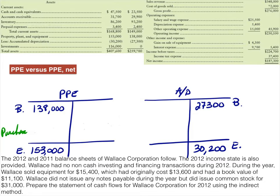Property, plant, and equipment is an asset so it carries a normal debit balance. Accumulated depreciation is a contra asset, so it does appear in the assets section of the balance sheet but it carries a credit balance. In the story it tells us that we sold equipment for $15,400 and that equipment had an original cost of $13,600. Since we have separated our PP&E and accumulated depreciation accounts, the cost of whatever we sell comes out of the PP&E account because that is kept at cost. So that $13,600 will be a credit to property, plant, and equipment.